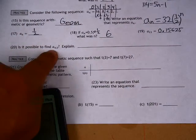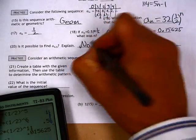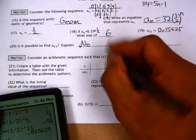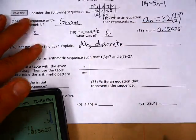Is it possible to find A of 4.5? No. Our terms are whole numbers, so in a sense, this is a discrete function.